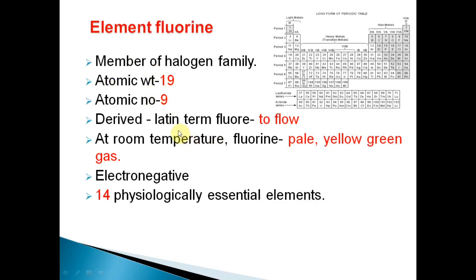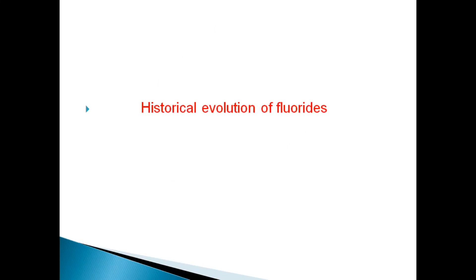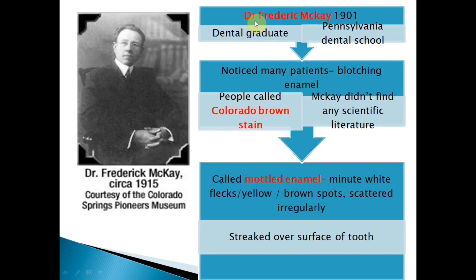Some basic facts about fluorine: it has atomic weight 19 and atomic number 9. It is derived from the Latin word 'fluoro,' meaning 'to flow.' It is a very electronegative element, so it cannot exist as a free element — it always combines with other elements to form compounds such as calcium fluoride (fluorspar) and sodium fluoride. It exists only as compounds.